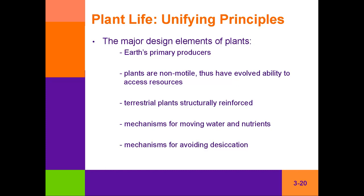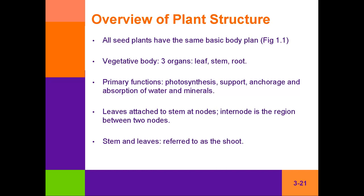All plants which produce seeds have the same basic body plan. When we talk about insects, all insects have the same body plan: head, abdomen, and thorax. Plants, similarly, are divided between the leaf or overall canopy, the stem — sometimes referred to as the trunk or bole — and the root or root zone. So: the leaf, the stem, and the root.